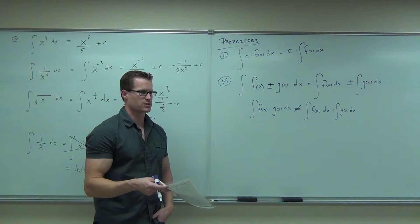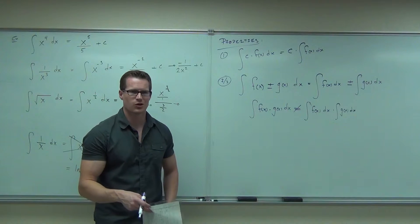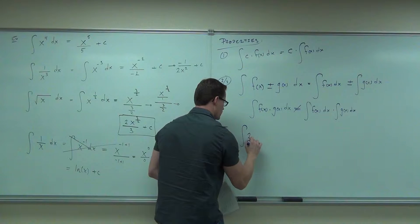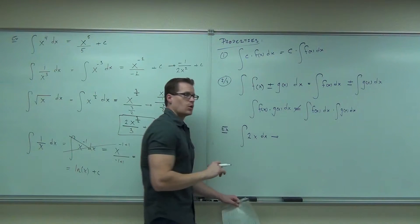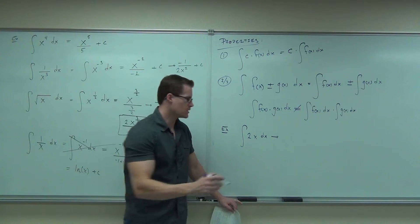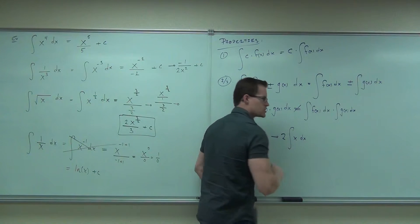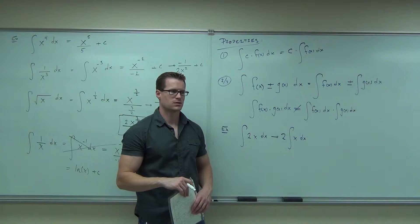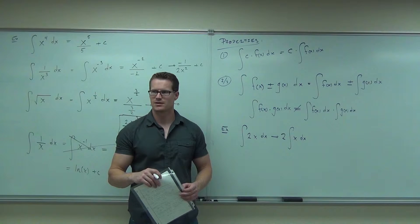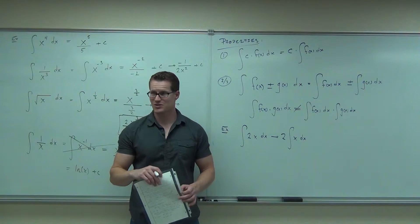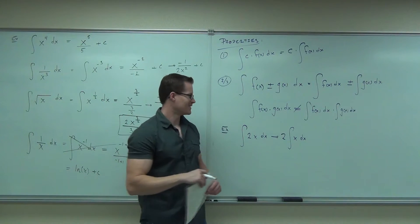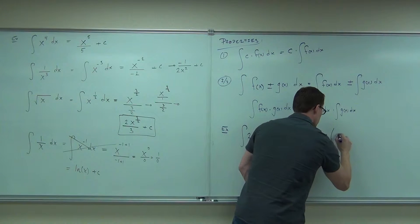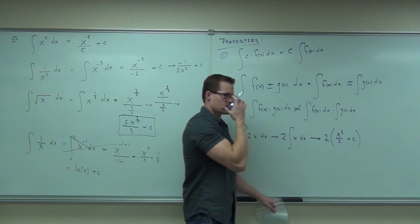Let me caution you about the c's. You know we have to have plus c's. Let me give you a quick example. If you had the integral of 2x — note that 2 is a constant, so you can pull it out in front of your integral. This would be 2 times the integral of x. The integral of x is x squared over 2. So you'd have 2 times x squared over 2 plus c.